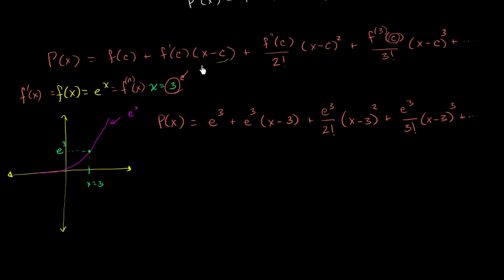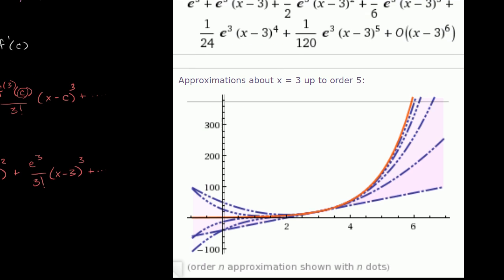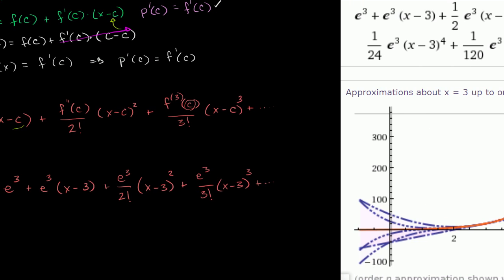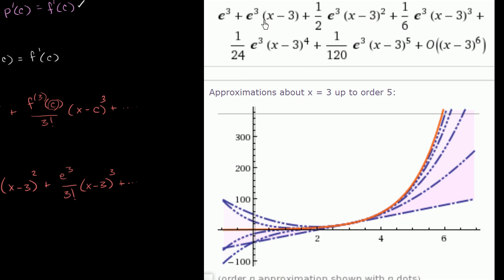What's even more interesting than going through the mechanics is seeing how, as we add more and more terms, it starts to approximate e to the x better and better, and our approximation gets good further and further away from x equals 3. To show this, I used Wolfram Alpha at wolframalpha.com. I typed in 'Taylor series expansion e to the x at x equals 3,' and it gave me all of this. You can see it's the exact same expansion we have: e to the third plus e to the third times x minus 3 — they expanded out the factorials, writing 6 instead of 3 factorial.